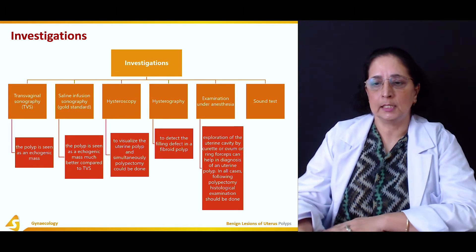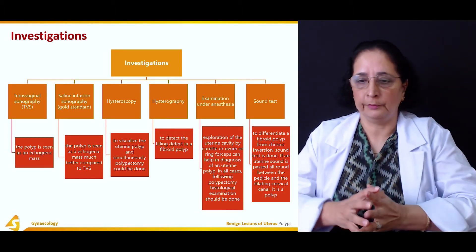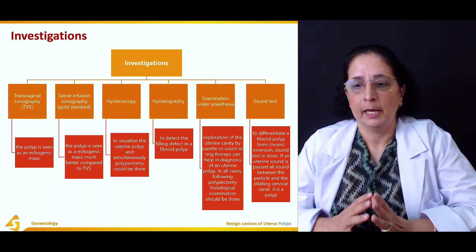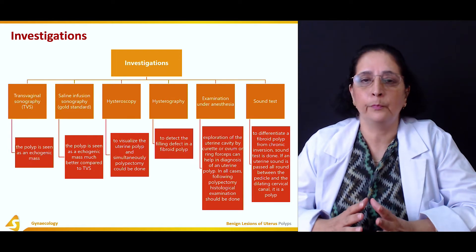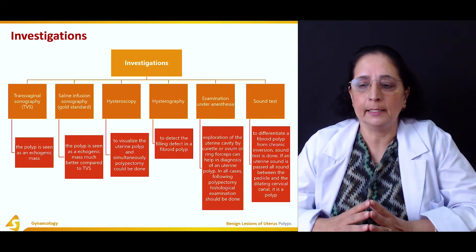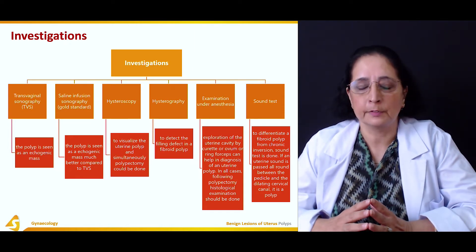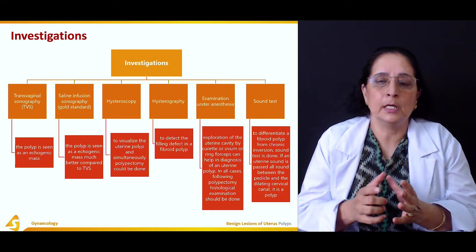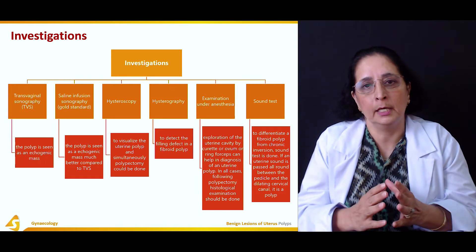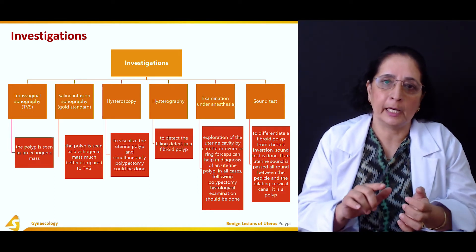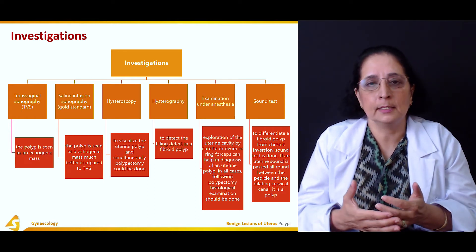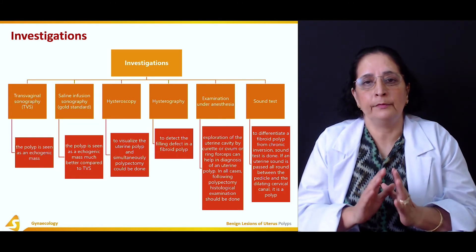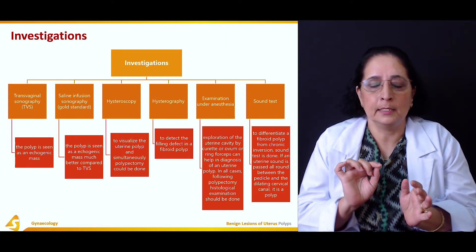The sound test is done to differentiate a fibroid polyp from chronic inversion of the uterus. A uterine sound — a long instrument — is inserted, and if it passes clearly all around between the pedicle and the dilating cervical canal, it confirms the mass is a polyp. The uterine sound is also used before procedures like D&C to determine the direction and position of the uterus.